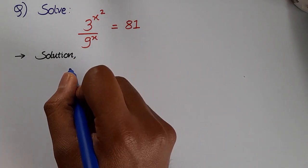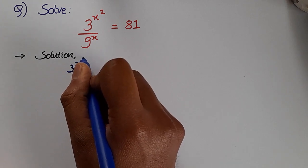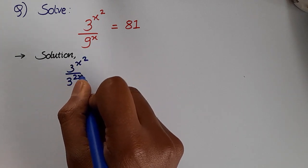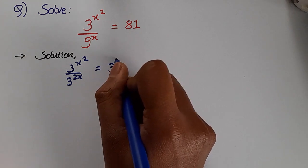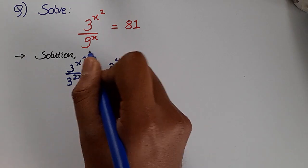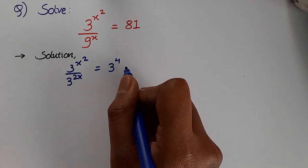This can be written as 3^(x²)/3^(2x) = 3^4. We are expressing 9 and 81 in terms of powers of 3.